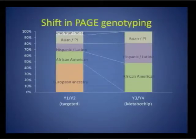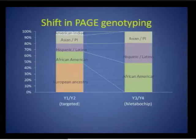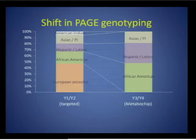Data from the Metabochip pilot suggested that the population-specific fine-mapping approach would indeed be informative in more comprehensively assessing whether and why GWAS-identified regions might not generalize to non-European populations. In conjunction with our external scientific panel, or ESP, PAGE decided to refocus genotyping during years three and four to exclusively Metabochip genotyping.